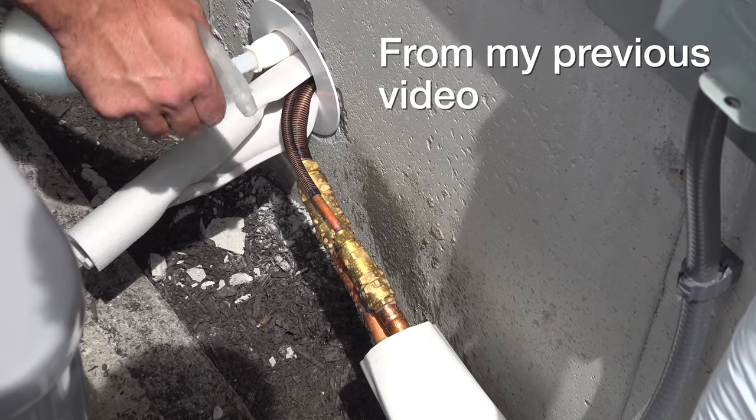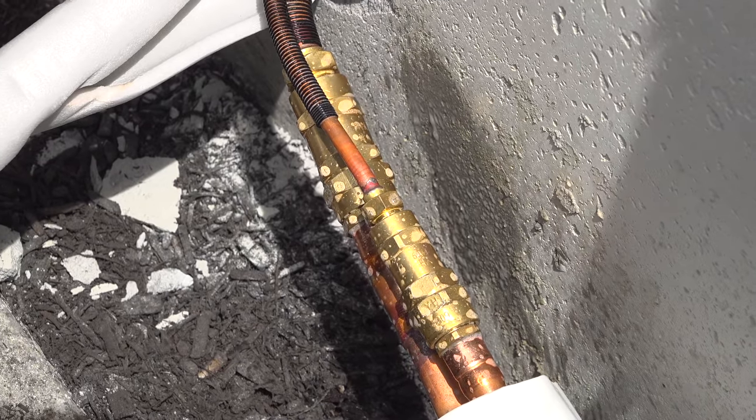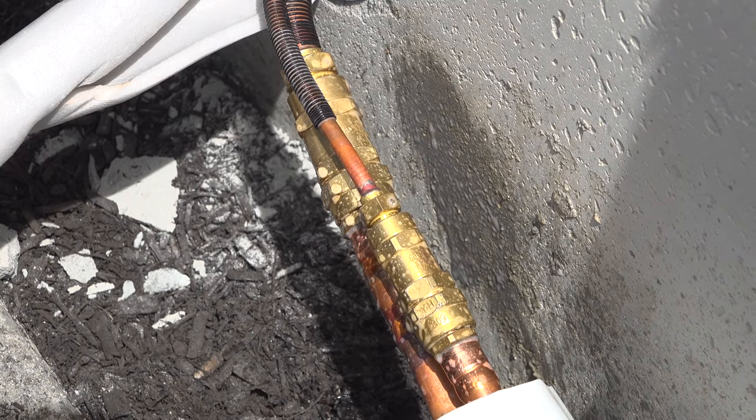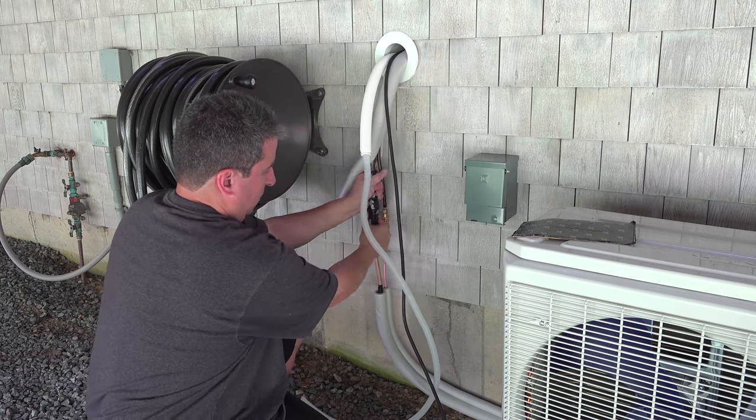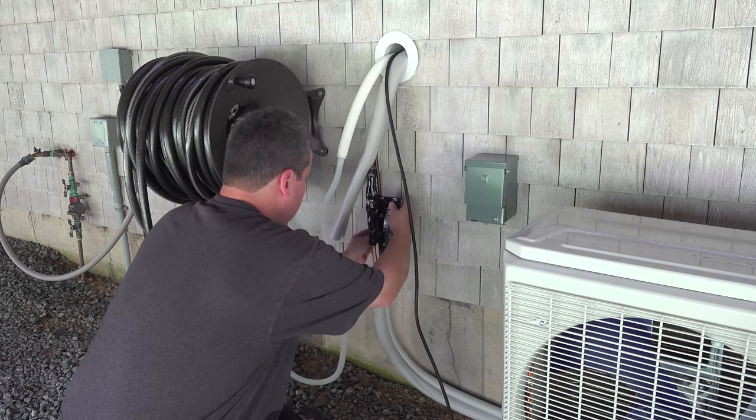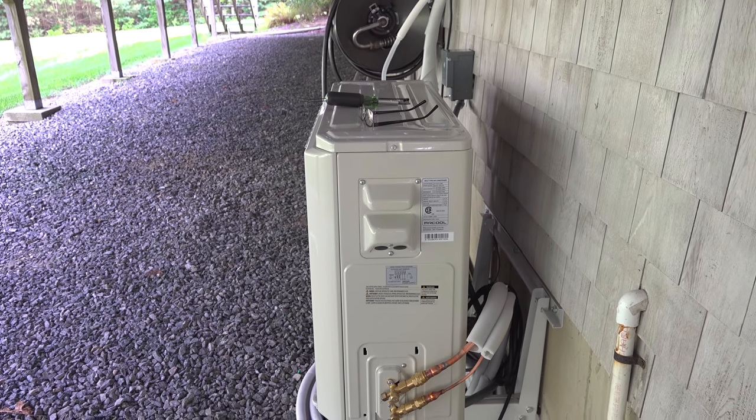Now you'll want to do a leak test. That just involves spraying some soapy water on the connection to make sure you don't have any bubbles hissing or hear any type of noise. Now I just need to finish up these pipes. They include this anti-noise tape in the box that you just wrap around the connections. And I also connected the extension onto that condensate line for the water drain.